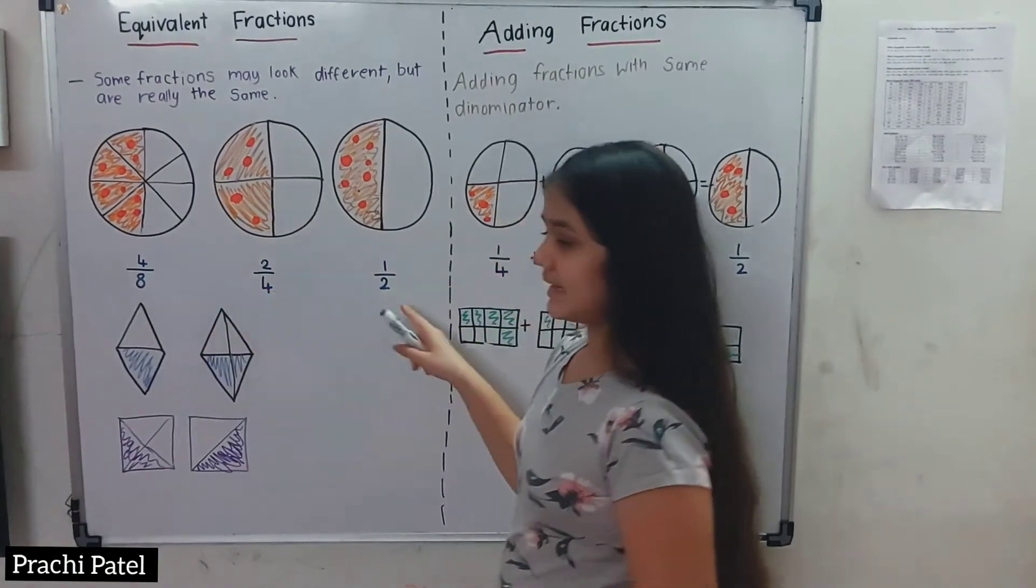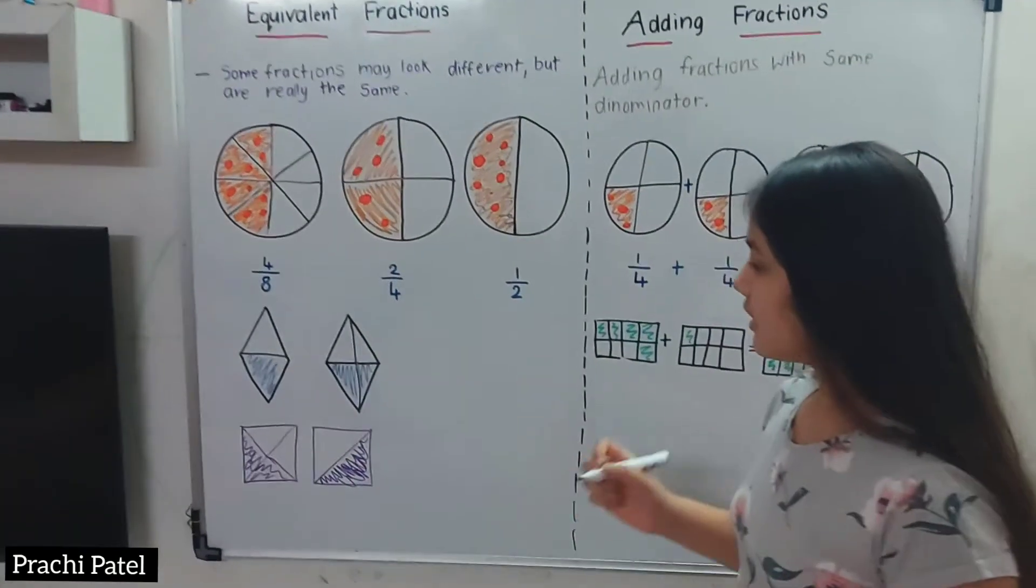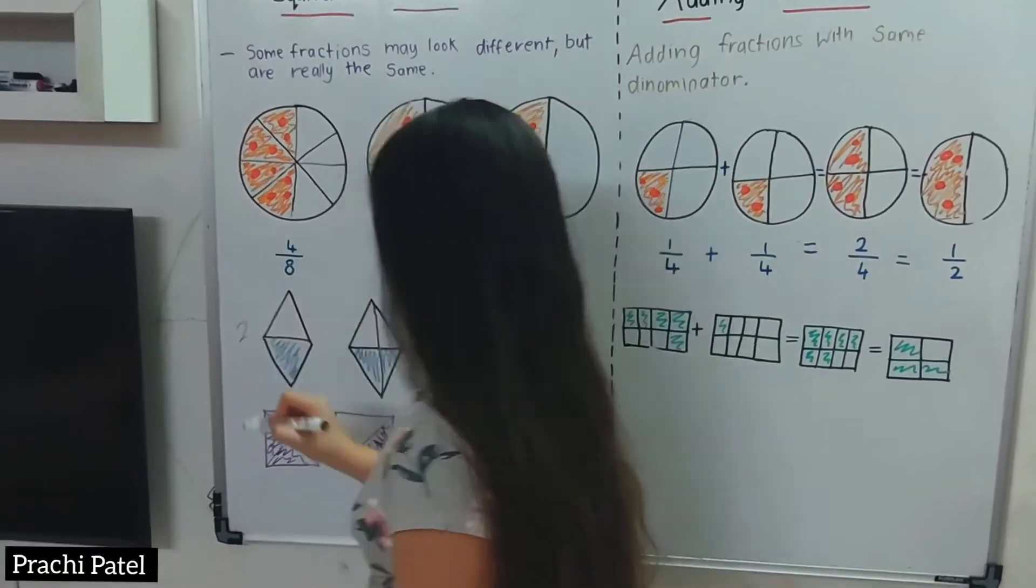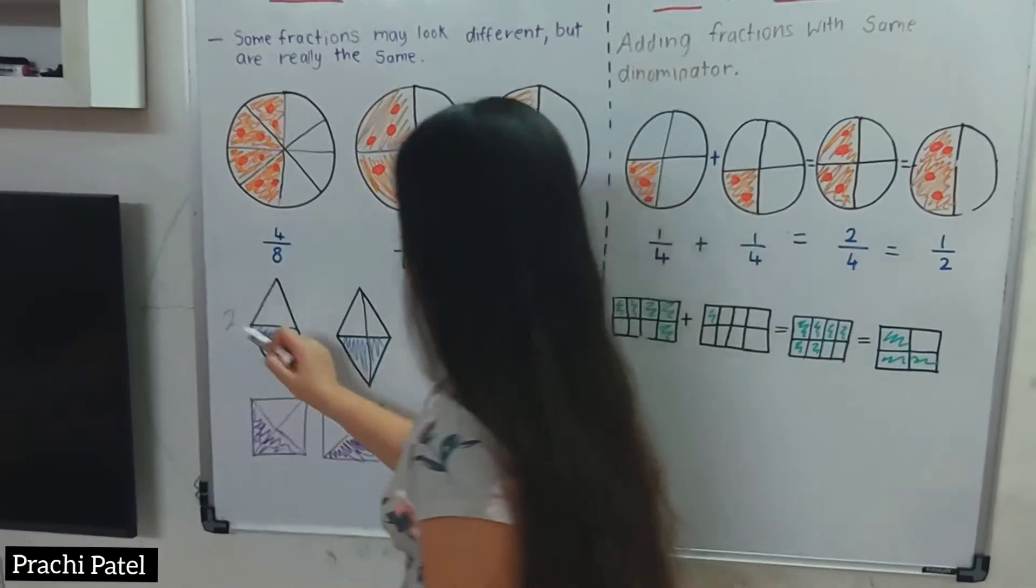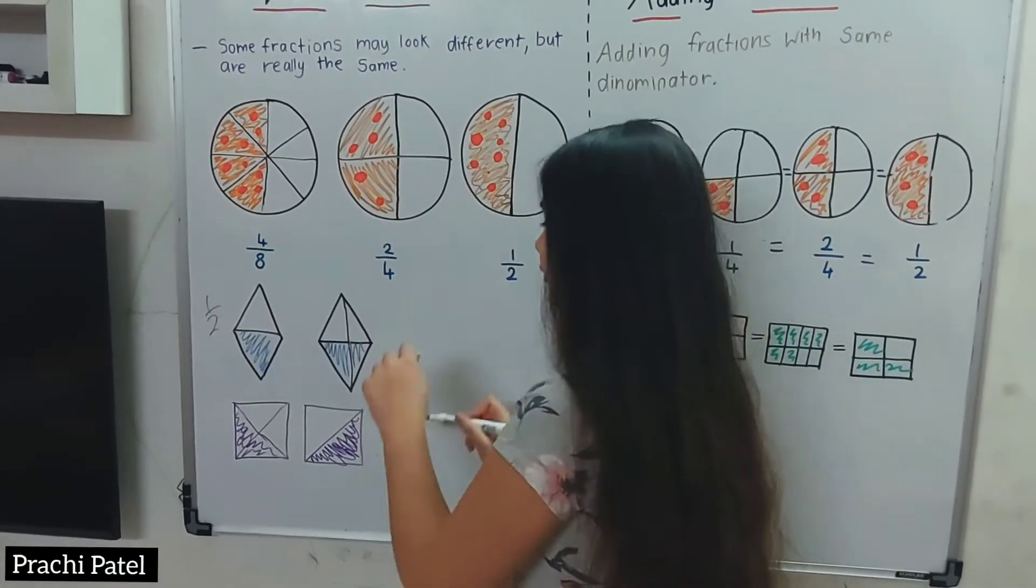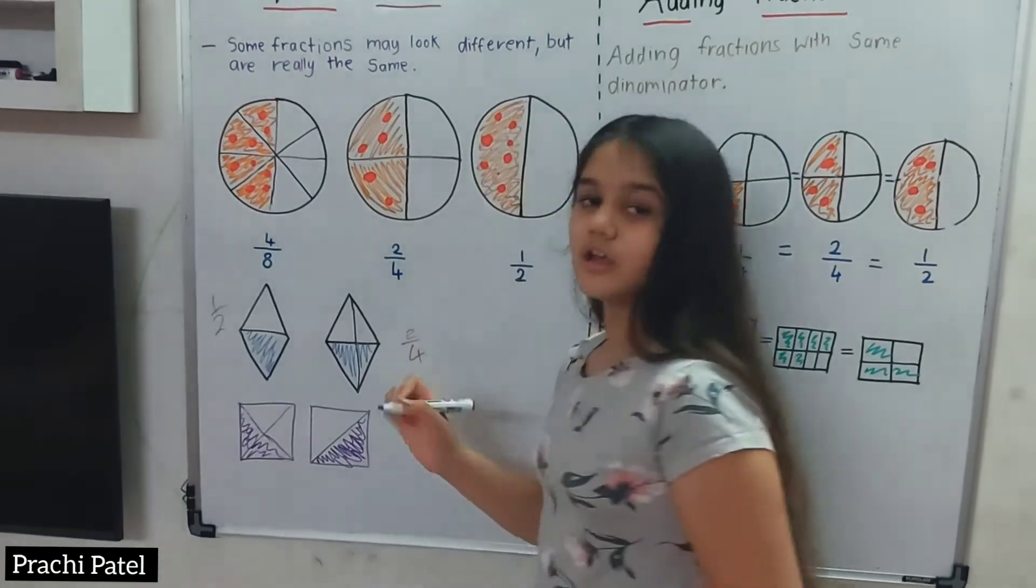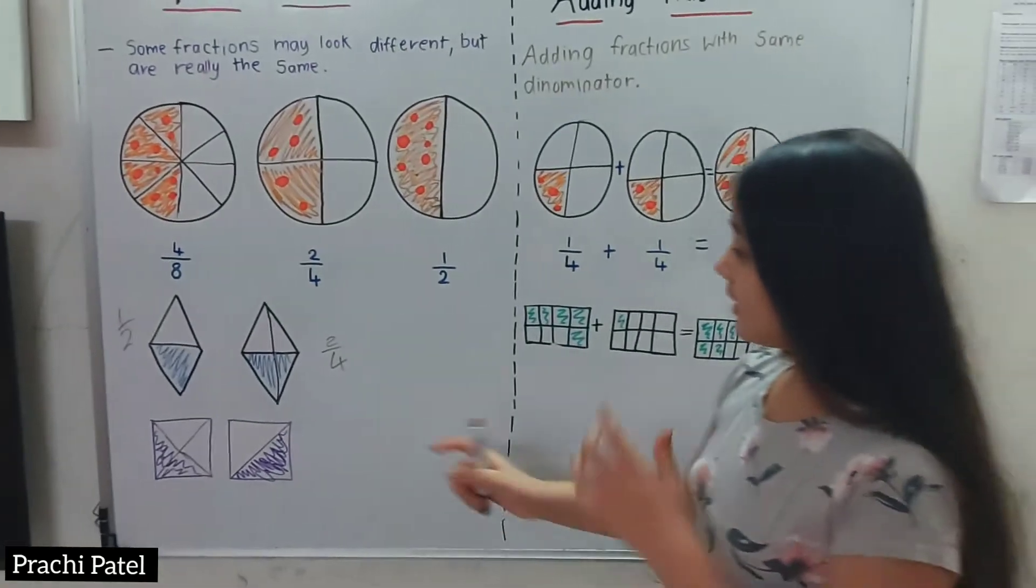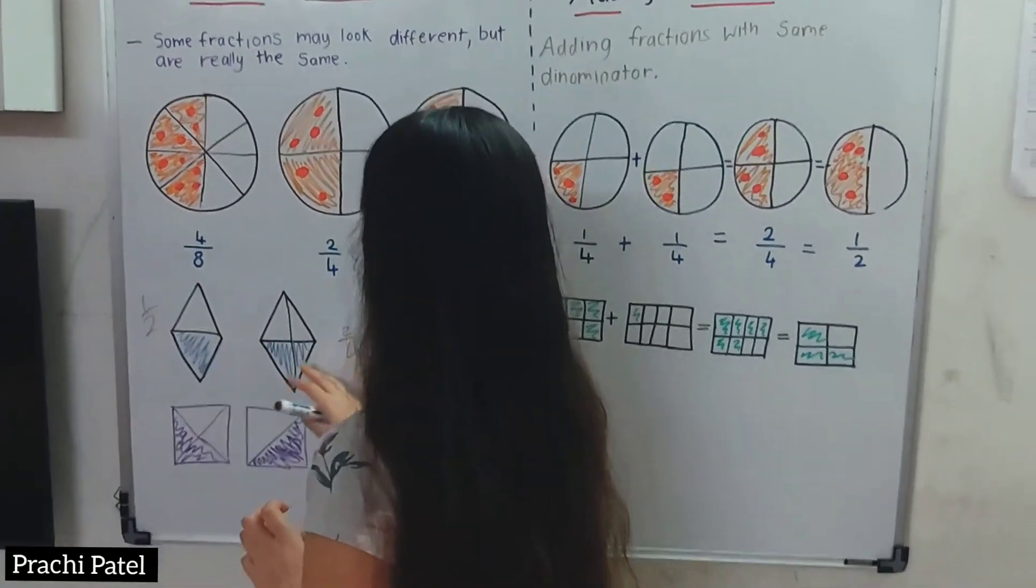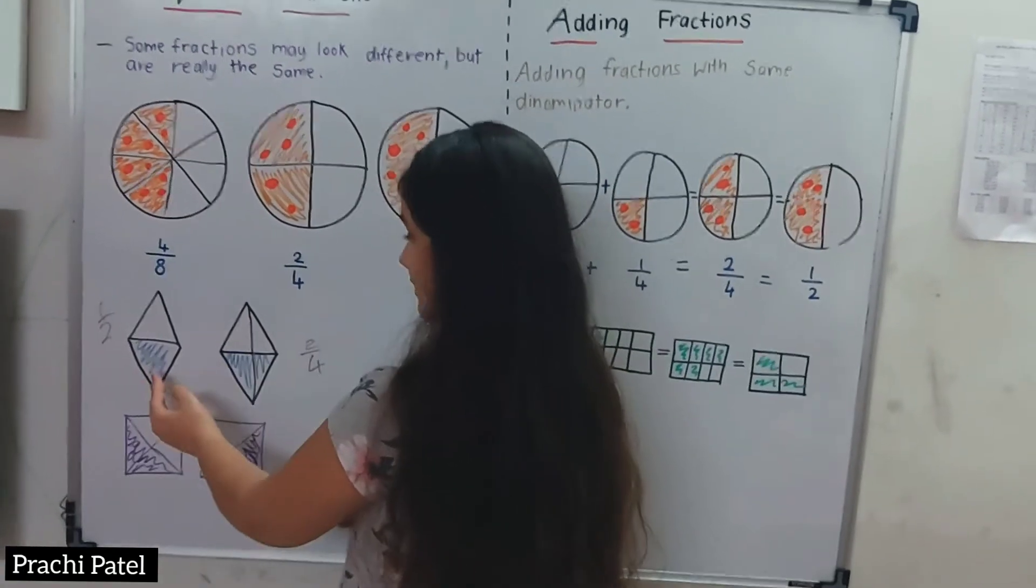But numerically, it looks different. For example, let's solve this. We have 2 pieces and 1 is shaded, so 1/2. Now here we have 4 pieces and 2 are shaded, so 2/4. This fraction is different but it looks the same because it colored 4 parts, 2 parts and 1 part.